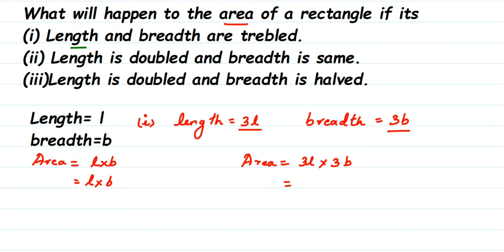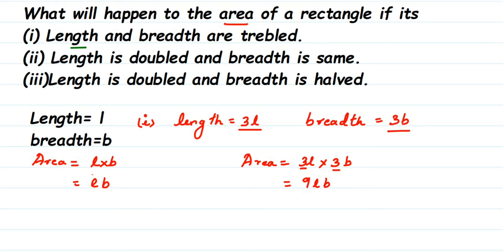Multiplying 3L into 3B: 3 into 3 is 9, so we get 9LB. You can see it is 9 times more than the actual area. The normal area was LB, and when you triple the length and breadth, the area becomes 9LB — therefore it is 9 times the old area.